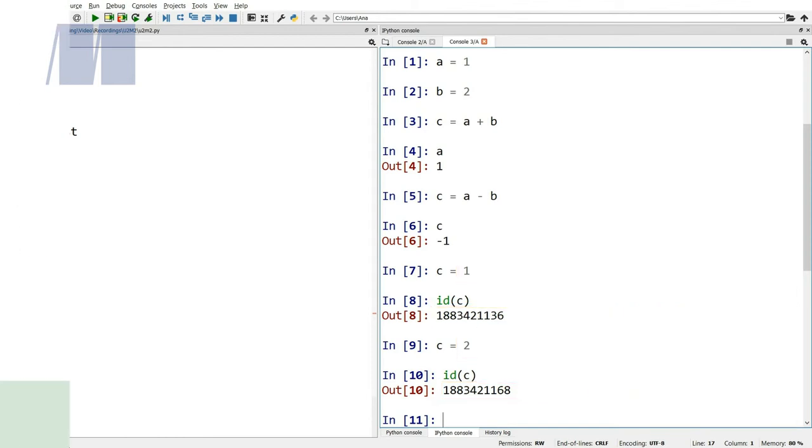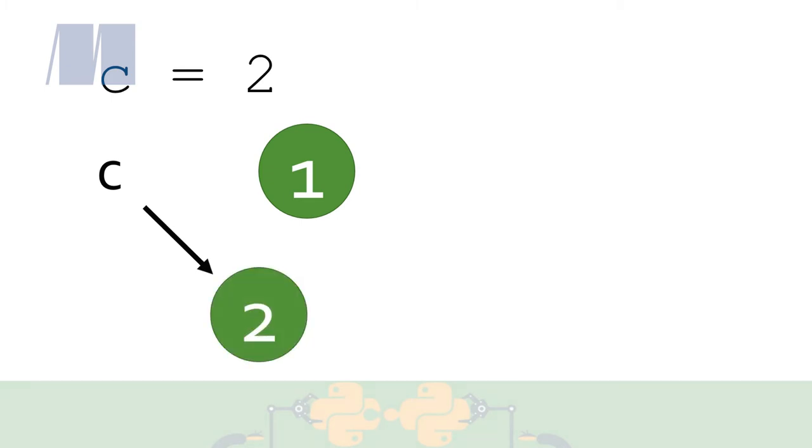So what exactly happened behind the scenes? We created a variable named c, and we bound it to the object with a value of 1. This object with a value of 1 is stored somewhere in memory. As soon as we said c is equal to 2, we took the variable named c, we lost the binding to the object with a value of 1, and we rebound the variable named c to a new object with a value of 2. The object with a value of 1 is still somewhere in memory. We've just lost access to it.